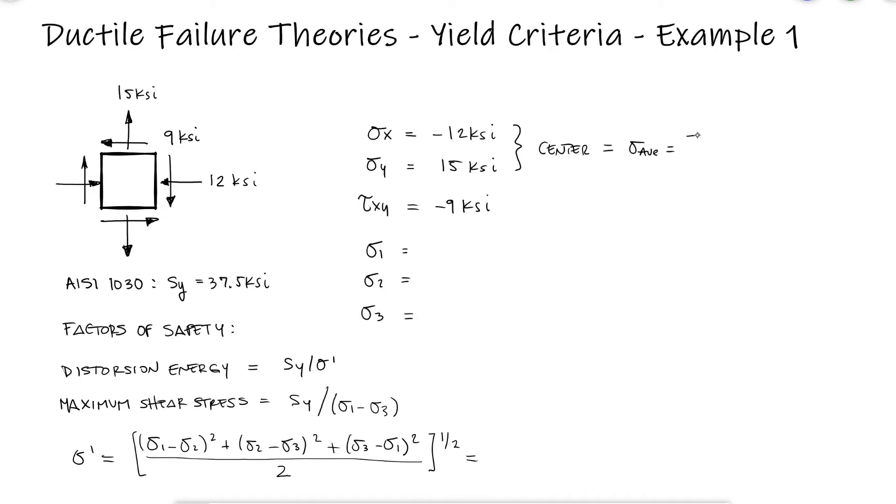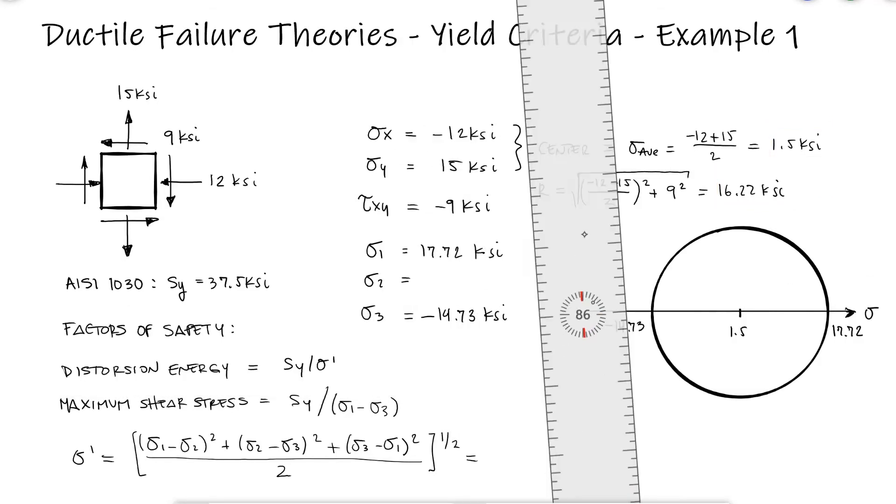With the center of the Mohr circle at 1.5 ksi and a radius of 16.22, we find that the principal stresses are 17.72, minus 14.73, and 0.